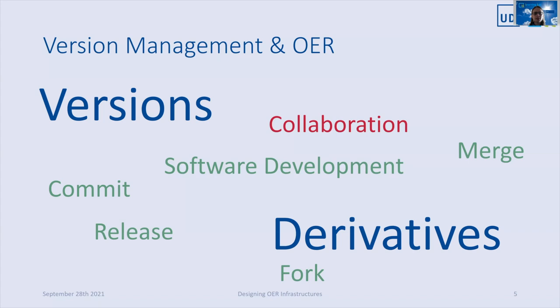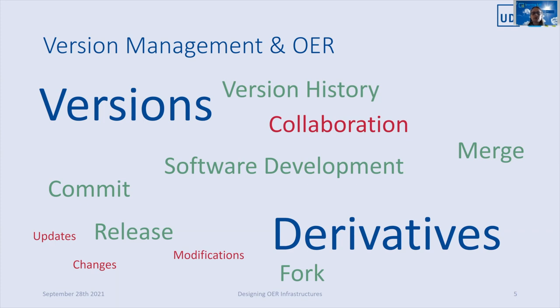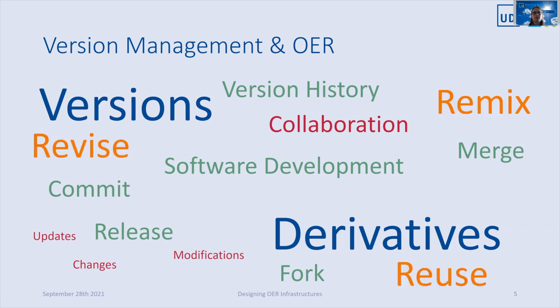By changing, editing, and updating one's own material, new versions are created. And especially when working together, version history and tracking changes are important. Derivatives are created by using and adapting content of others. These so-called forks enable a connection between a derivative and the original version. Both scenarios can be adopted for OER when we think of revising, reusing, remixing and redistributing content according to the five R's.